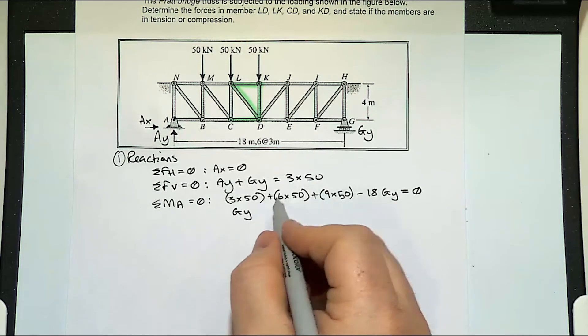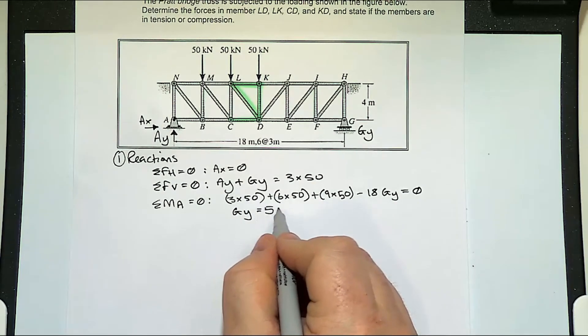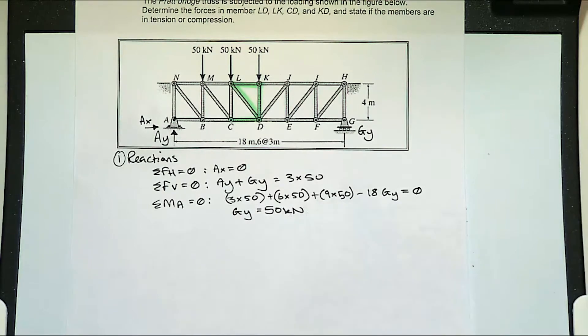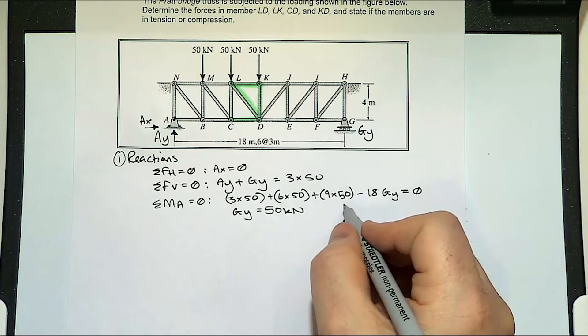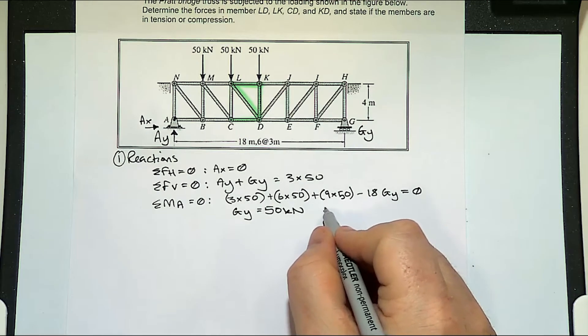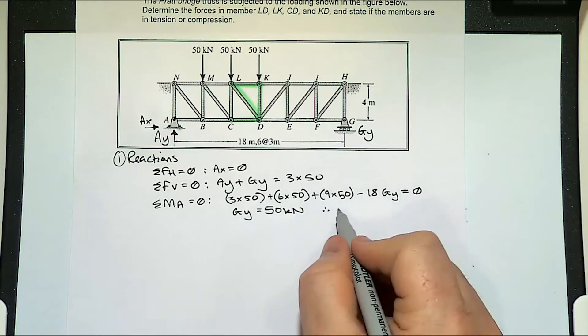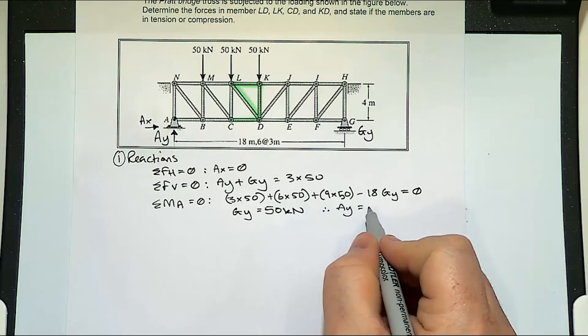So our G_y equals 50. And therefore, when we put that into this formula here, our A_y is 100.